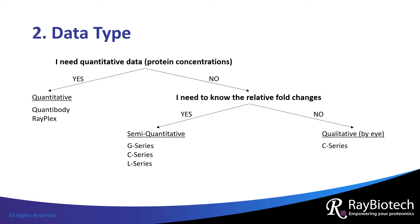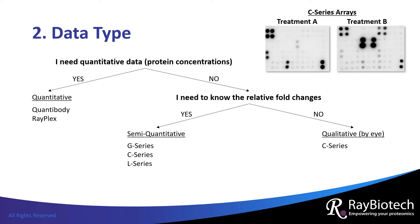Qualitative data, or signals that are simply assessed by eye, are possible with our C series array. Here are images of our C series array incubated with samples undergoing two different treatments. It is clear that the protein highlighted here, printed in duplicate, is more highly expressed with treatment B than treatment A. However, it is impossible to accurately determine the full differences between them by eye.